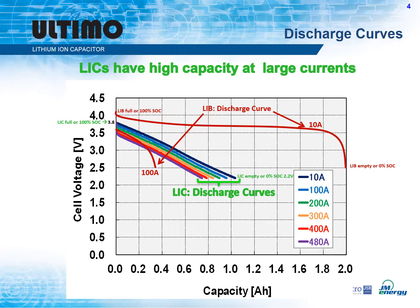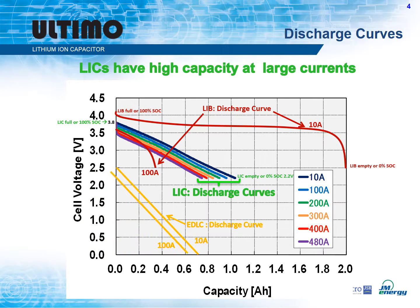LICs, by comparison, have a slight reduction in amp hours at 100 amps, or 100C, easily providing more usable energy. In fact, much higher rates are possible. Finally, in yellow, we add an electric double layer capacitor discharge curve at 10 amps, and also at 100 amps, showing its ability to easily handle high currents.